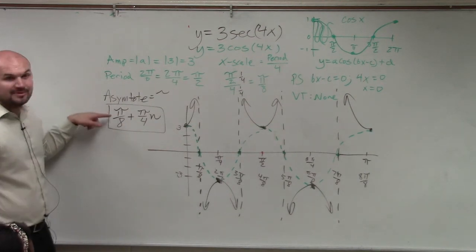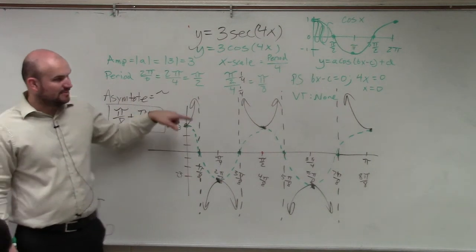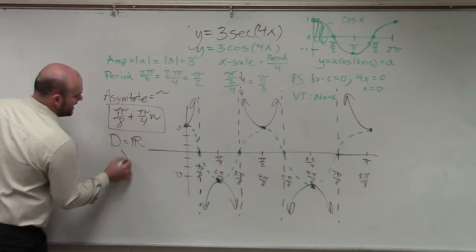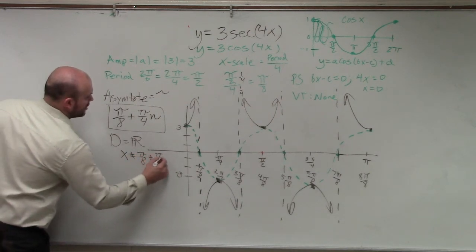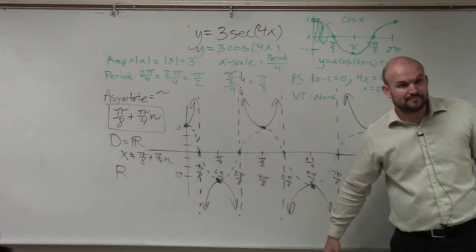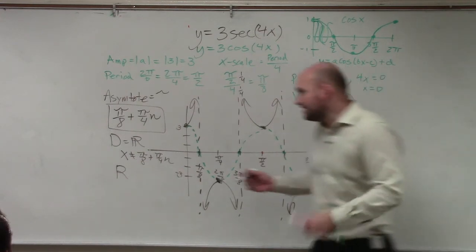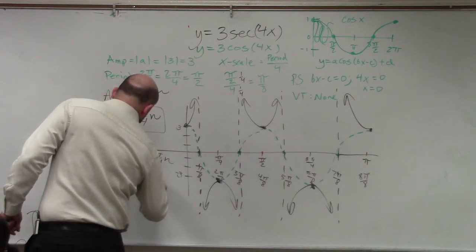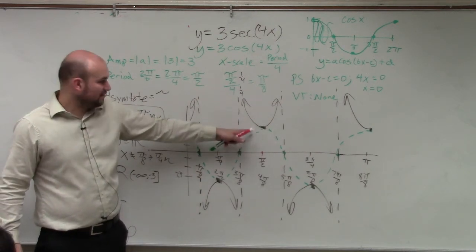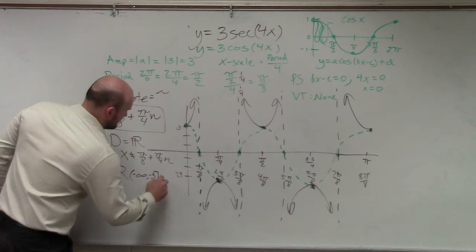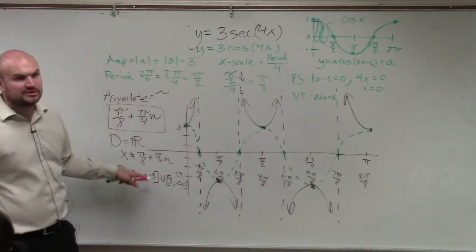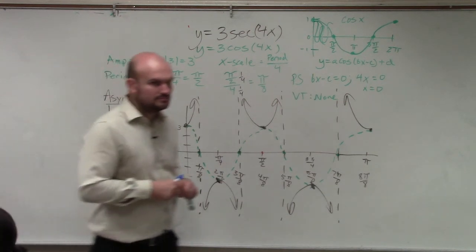So the domain is all real numbers except for these values. Domain is all real numbers except I'll say x cannot equal π over 8 plus π over 4n. What about the range? What is the range of these? Well, how low does this graph go? Negative infinity to how high? Negative 3. So it's negative infinity to negative 3. And then what about the second part? How low does that go? 3 to how high? Infinity. So union 3 to infinity. But there's nothing in between negative 3 and 3. So you've got to make sure you understand how to write the domain.